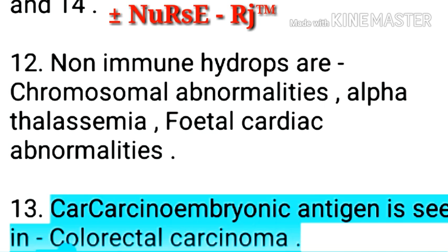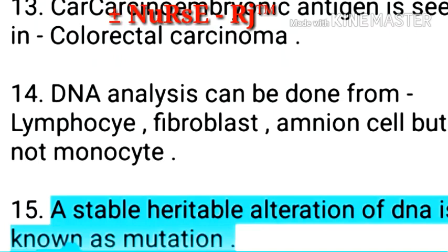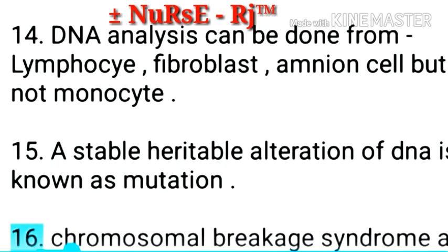Point 13: Carcinoembryonic antigen is seen in colorectal carcinoma. Point 14: DNA analysis can be done from lymphocytes, fibroblasts, and amniotic cells, but not monocytes. Point 15: A stable heritable alteration of DNA is known as mutation.